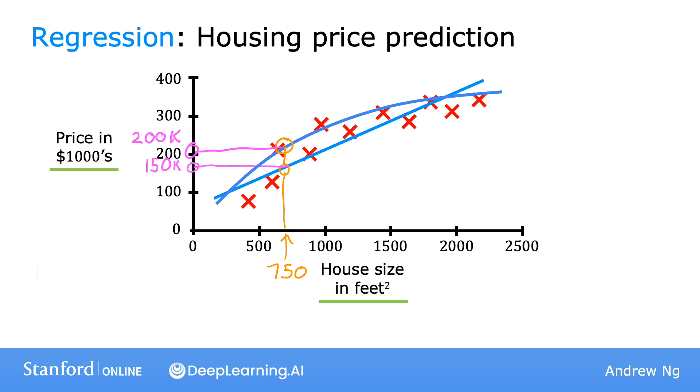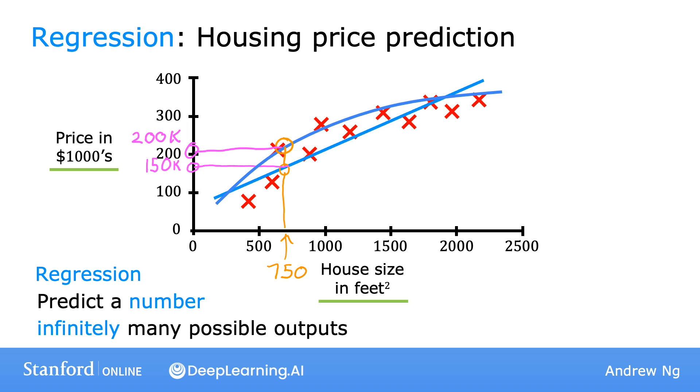To define a bit more terminology, this housing price prediction is a particular type of supervised learning called regression. By regression, I mean we're trying to predict a number from infinitely many possible numbers — such as house prices, which could be $150,000, $70,000, $183,000, or any other number in between. There's also a second major type of supervised learning problem called classification. Let's take a look at what that means in the next video.